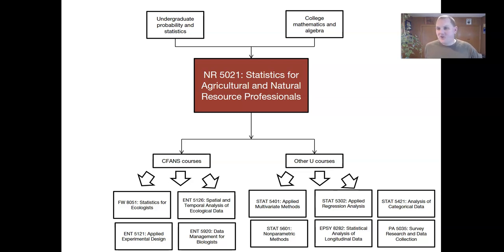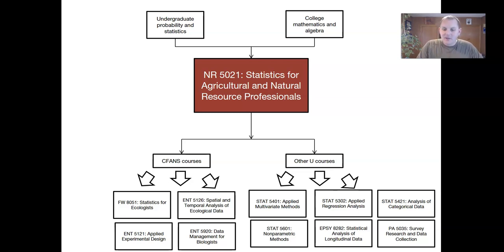If you have categories in your data set — categorical data — STAT5421 is a great option for that. If you're looking for other ways to analyze your data using non-parametric methods, most of what we've done in this class has assumed we have data and can generate statistics based on those data. STAT5601 talks a lot about non-parametric methods.